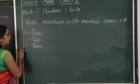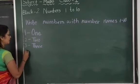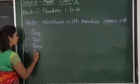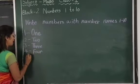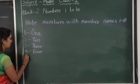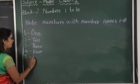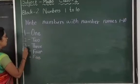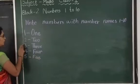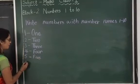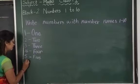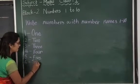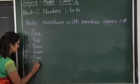After 3 comes 4 — F, O, U, R. After 4 comes 5 — F, I, V, E. After 5, which number? 6. S, I, X — six.